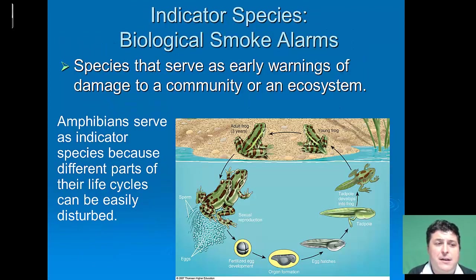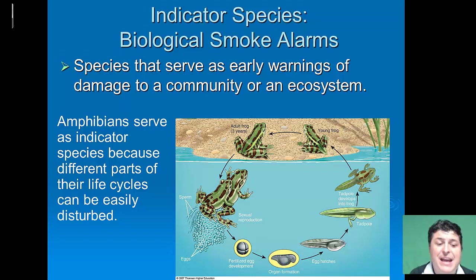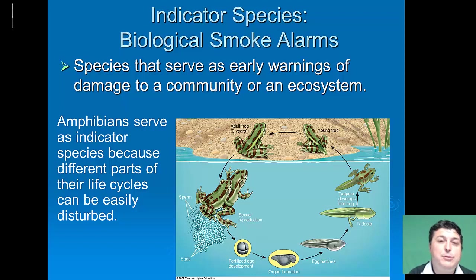Another type of species would be an indicator species. Indicator species are very sensitive to changes that take place in the environment and can serve as early warning systems of damage to a community or ecosystem. For most of the world, amphibians serve as great indicator species because different parts of their life cycle can be easily disturbed. When they are eggs, the clear eggs allow ultraviolet light or chemicals to infiltrate and damage developing embryos. The time they spend as juveniles in the water puts them in close contact with pollutants in aquatic ecosystems, meaning any issues will become evident in the number and condition of amphibian species.